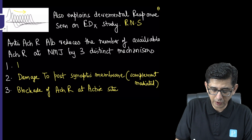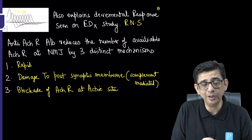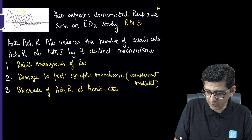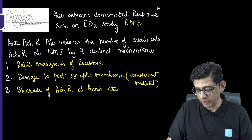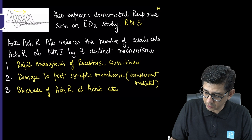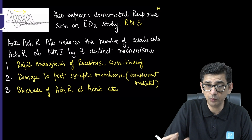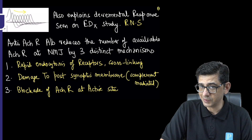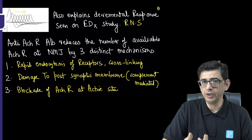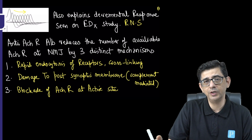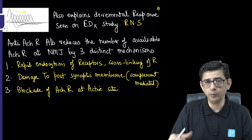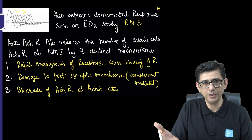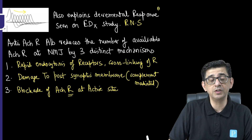The third mechanism — relevant mainly for MCQs — is accelerated turnover of receptors: rapid endocytosis of the receptors, also described as cross-linking of receptors. In summary, there are three mechanisms: first, rapid endocytosis and cross-linking causing accelerated receptor clearance; second, complement-mediated damage to the post-synaptic membrane leading to the burnt-out stage; and third, blockade of the acetylcholine receptor at its active site — all contributing to the post-junctional defect and decremental response seen in Myasthenia Gravis.